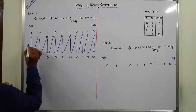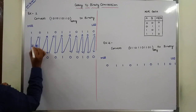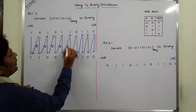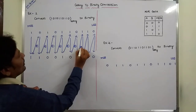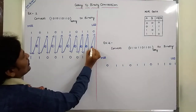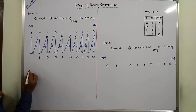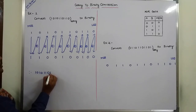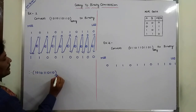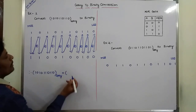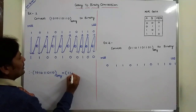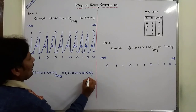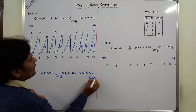Therefore, the given grey code number is 1010110110. The equivalent binary number is 1100100100. This is the equivalent binary number.